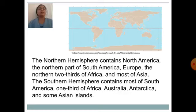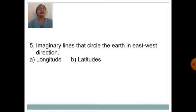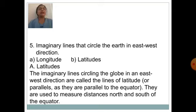The southern hemisphere contains most of South America, one-third of Africa, Australia, Antarctica and some Asian islands. Imaginary lines that circle the earth in an east-west direction is known as — option A: longitude, option B: latitudes. The imaginary lines circling the globe in east-west direction are called the lines of latitude. They are used to measure distances north and south of the equator.